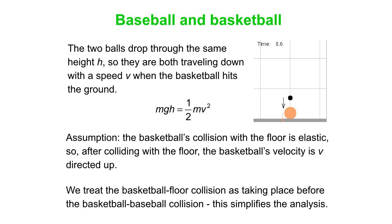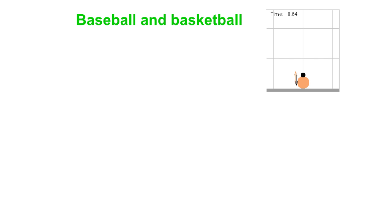Then the collision with the floor turns the basketball's velocity around, so now we have a basketball going up with v and a baseball coming down with the same speed v. We've treated the basketball floor collision as taking place before the basketball-baseball collision. It simplifies our analysis a bit but doesn't change the outcome.